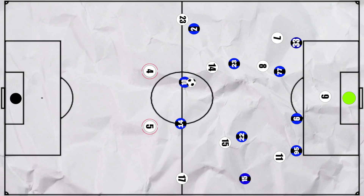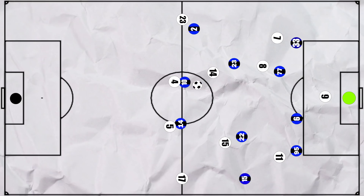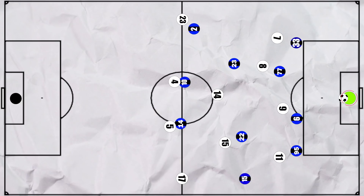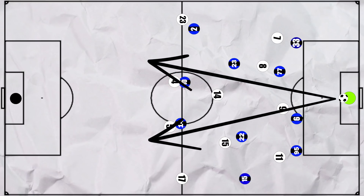Both of Madrid's centre backs went man to man and were aggressive in pursuing the centre forwards to apply pressure in deeper areas. This pressure meant that the forwards' hold-up play was often fairly poor and they would lose the ball, being dispossessed 7 times between the pair of them. In the second half, Handanovic began to change things up, as the Real centre backs were now anticipating the forwards dropping deep. So by going long, they almost got in behind the defence a few times. And by making these runs in behind, Real's backline began to drop deeper, opening up even more space in midfield.